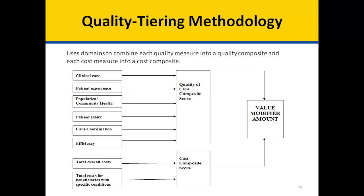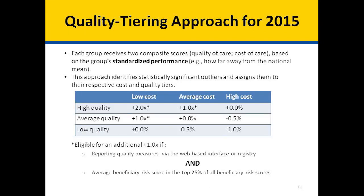The quality tiering methodology uses domains to combine each quality measure into a quality composite and each cost measure into a cost composite. Each group receives two composite scores based on the group's standardized performance — for example, how far away from the national mean. This approach identifies statistically significant outliers and assigns them to their respective cost and quality tiers as shown in this table.